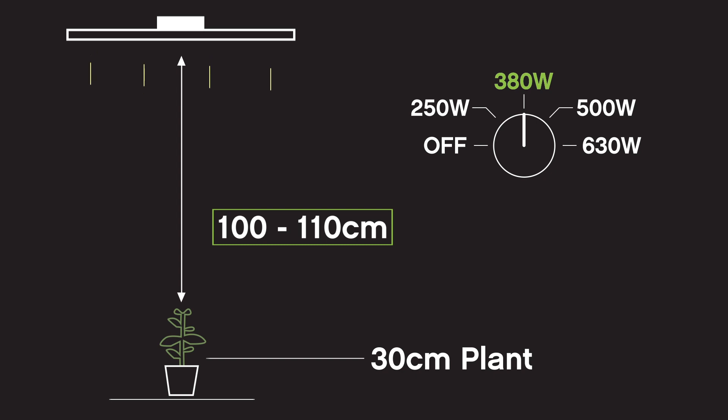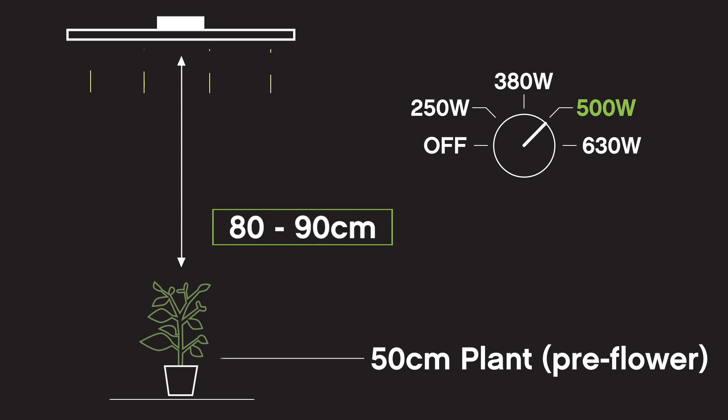The next stage is when your plant is roughly 50 centimeters tall or entering its pre-flower phase. Here you can raise the wattage on your fixture to 500 watts and start using a distance of 80 to 90 centimeters from the canopy to the LED.